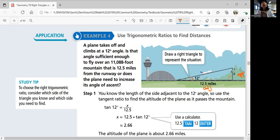So tangent is opposite over adjacent. So tangent 12 should be x over 12.5. Write the equation and you can solve for x. X is 12.5 times tangent 12. Plug it in the calculator. That's going to be about 2.66.